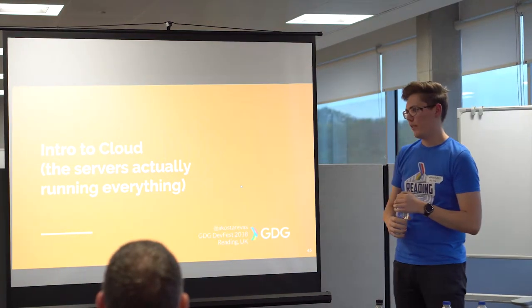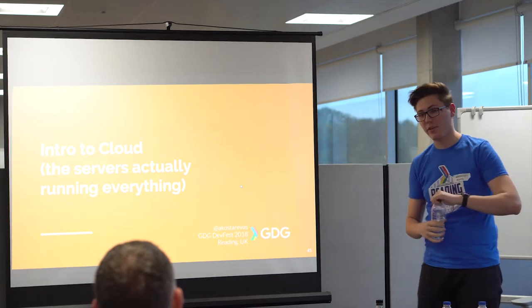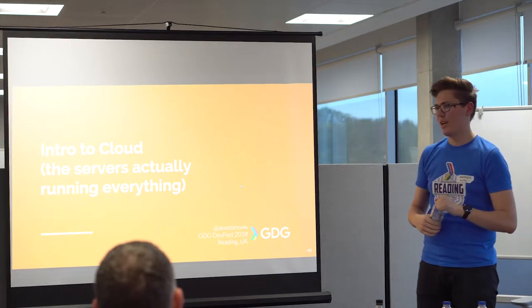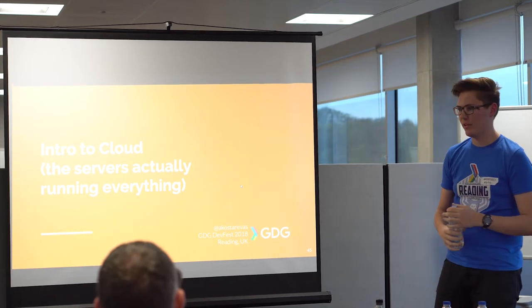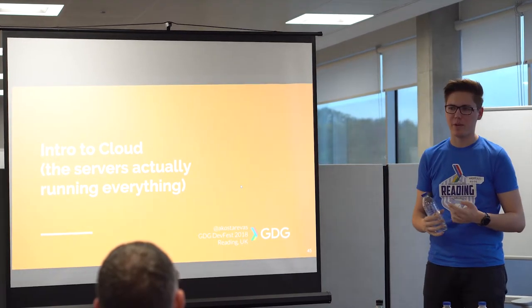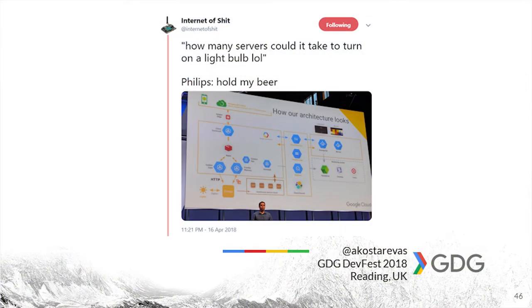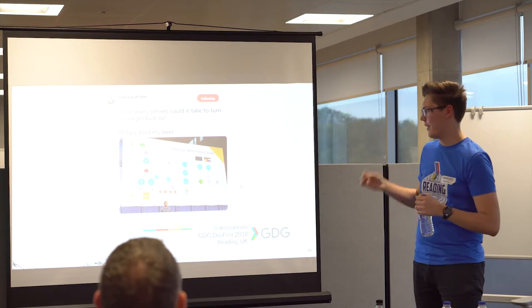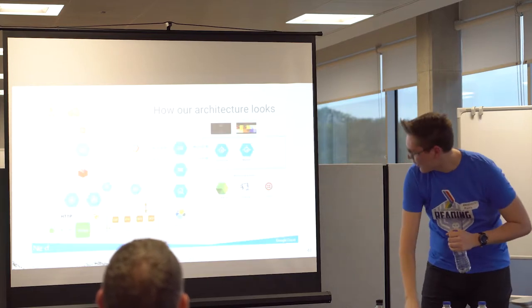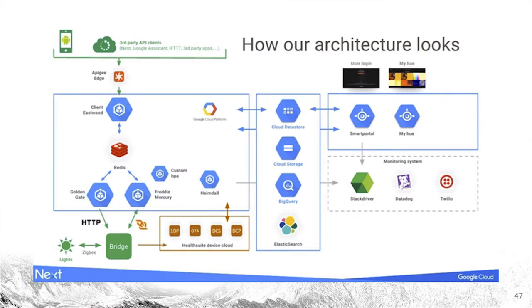That's the hardware side covered — how you connect an everyday object to the internet. The problem you can face running your own hosted server and not using serverless is that if you have ten thousand devices talking to a single server, that server will tend to fall over. That's not ideal when capturing sensitive data like patient health data — heart rate, ECG — and you lose a bunch of data because your server fell over. I love this tweet: 'How many servers could it take to turn on a light bulb? And then Philips says, hold my beer.' That's what the Philips cloud stack looks like — a slide from Google Cloud Next.